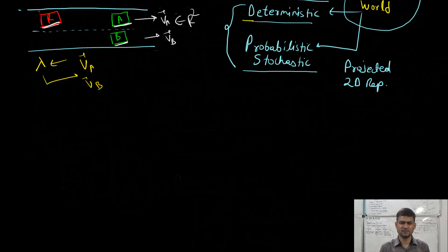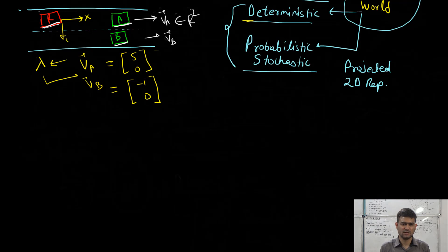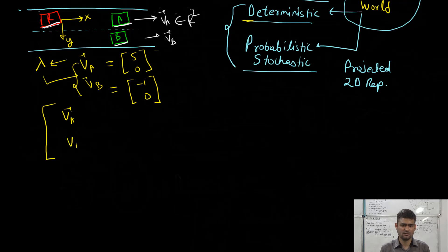If we are using a deterministic representation, then VA and VB would be deterministic variables. Assume lambda computes VA as (5, 0) and VB as (−1, 0), where the robot has an X axis and a Y axis. So the relative velocities computed are (5, 0) and (−1, 0). We can put them in a vector [VA, VB], which represents the world as a four-dimensional real vector.